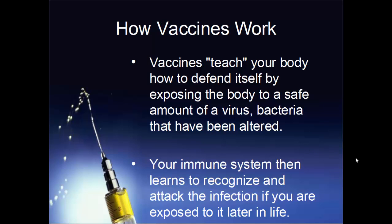Now, the main point: how do vaccines work? Vaccines teach your body how to defend itself by exposing it to a small, safe amount of an infectious agent — like a virus or bacteria — that has been altered so it can't make you sick. Your immune system then begins to recognize what can make you sick and knows what to attack. The immune system is very specialized and specific — it needs to know what to hunt. Vaccines present your body with targets so your immune system knows what to go after.